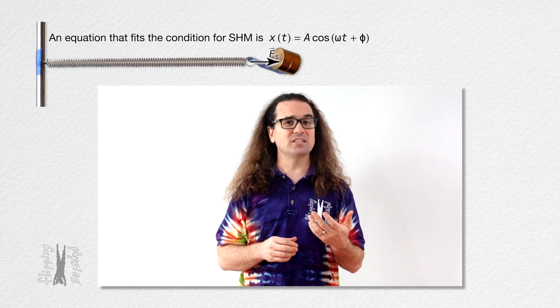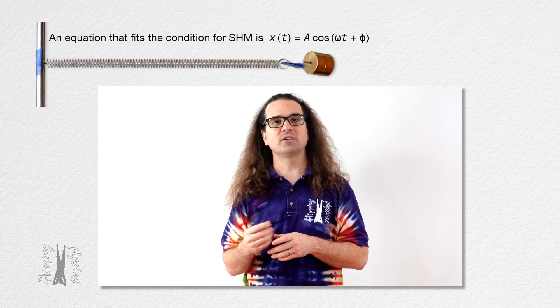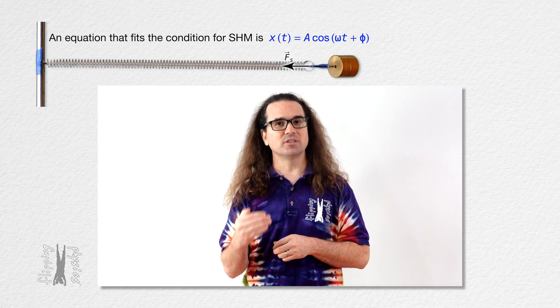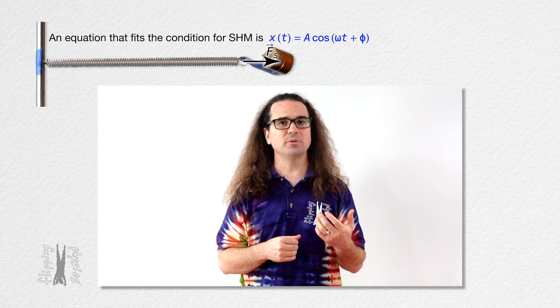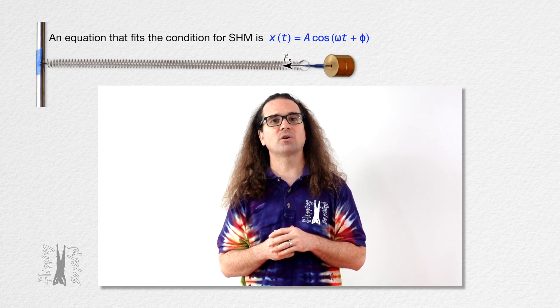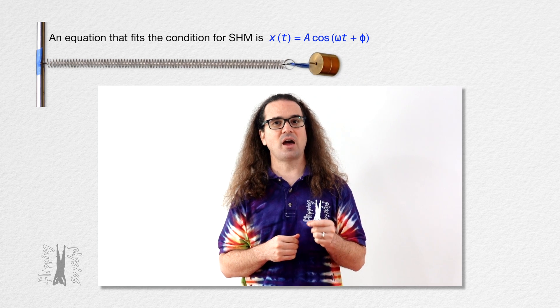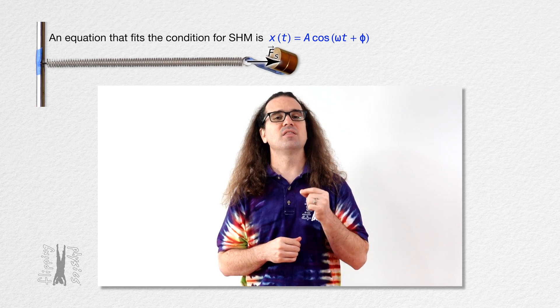A position equation which satisfies the mathematical definition of simple harmonic motion is position as a function of time equals amplitude times the cosine of the quantity angular frequency times time plus phi, the phase constant.